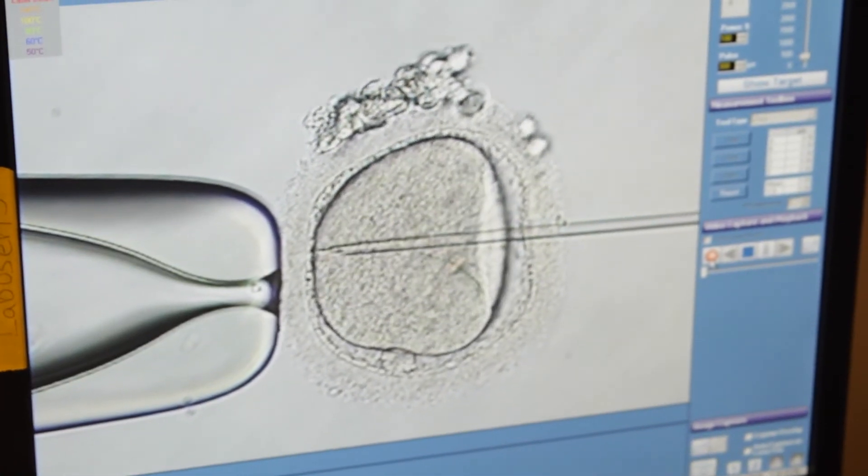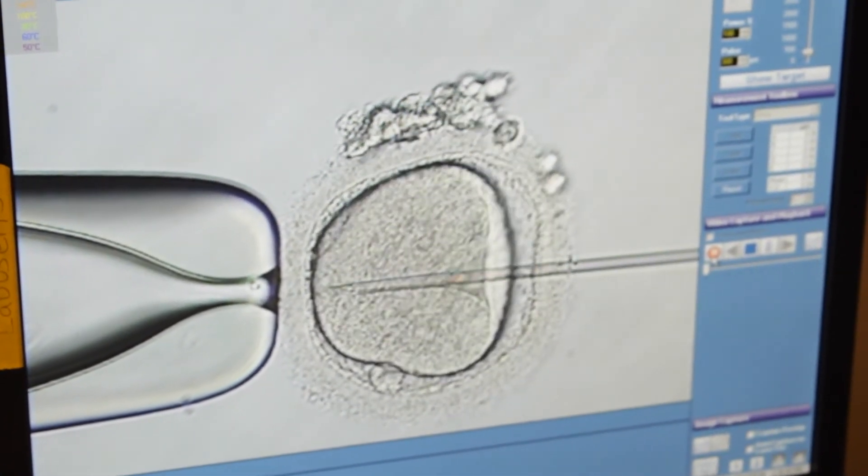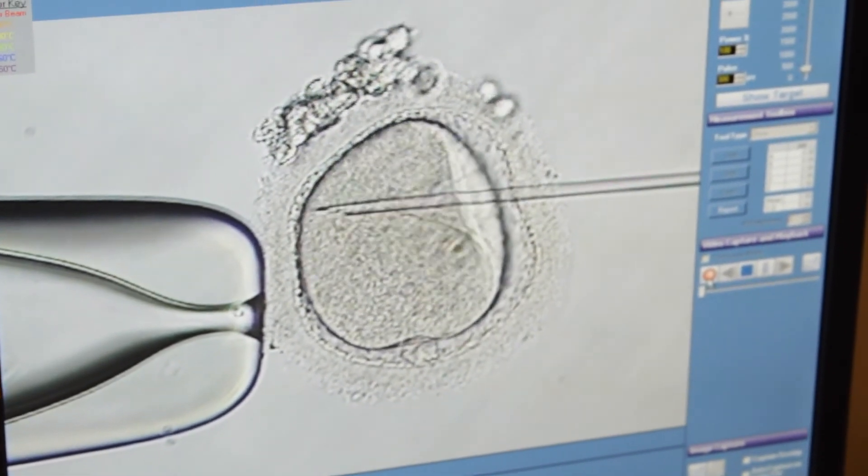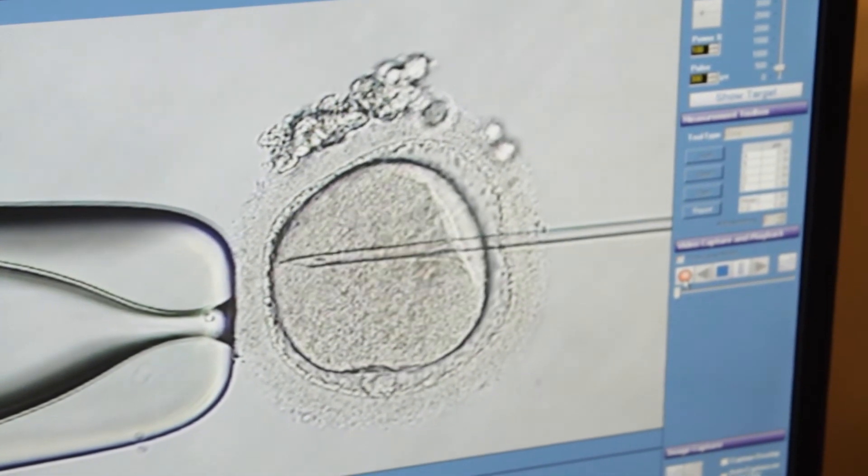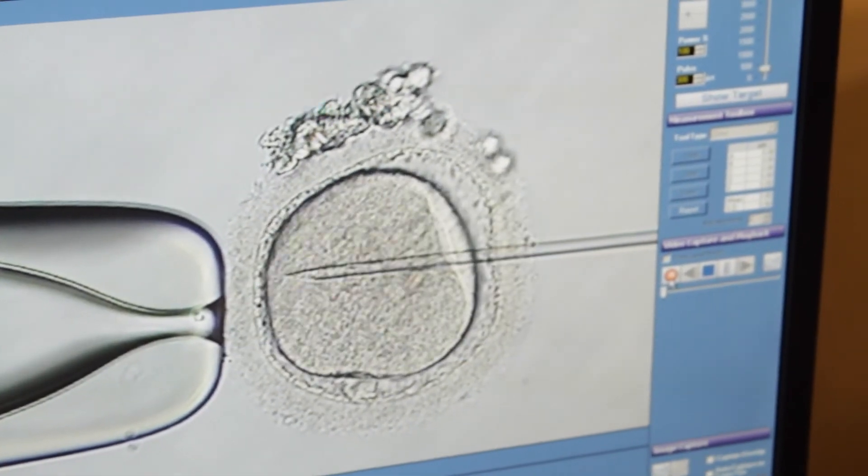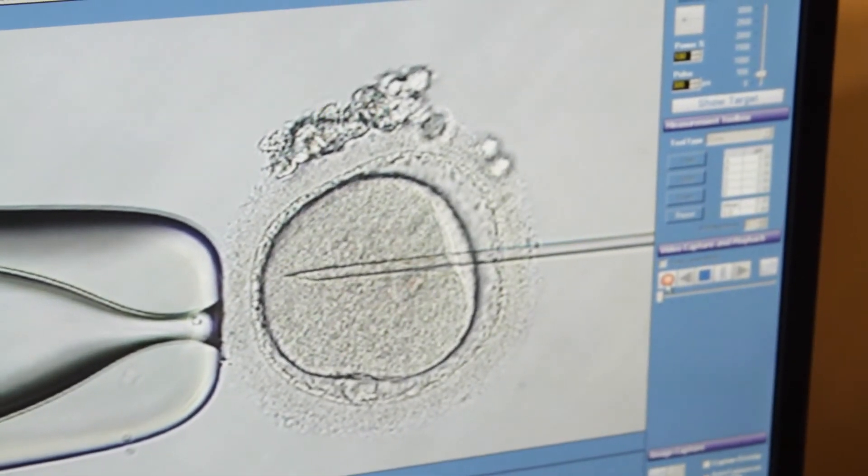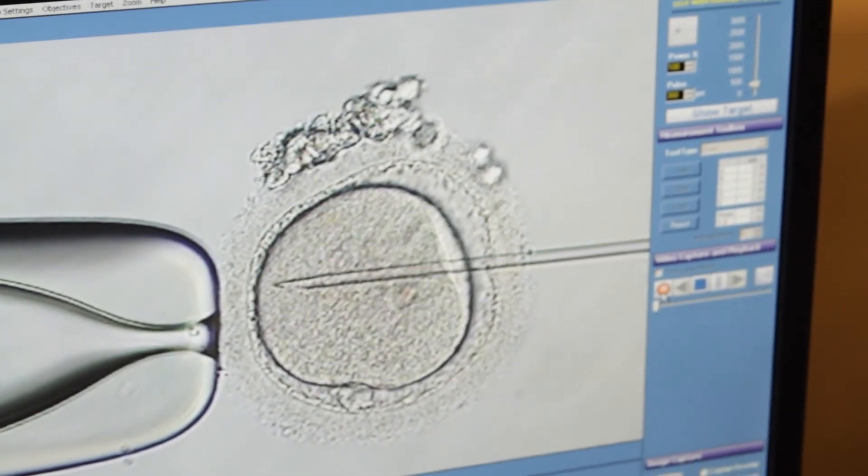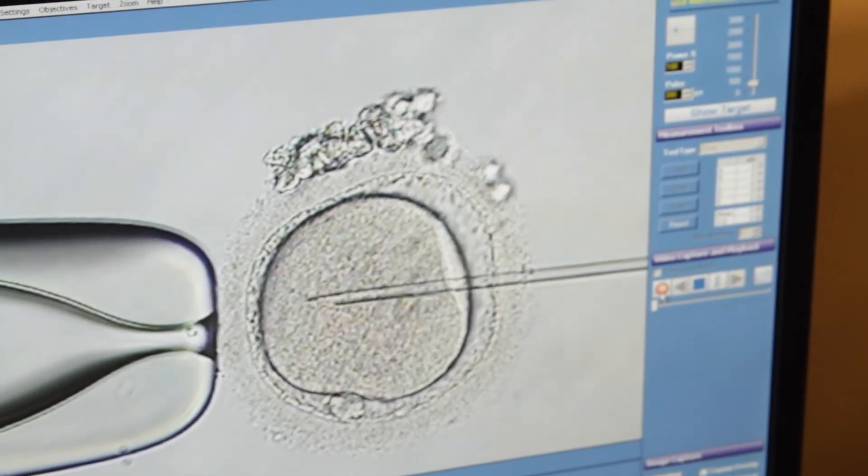Here at RMA of New York, we use a very gentle way of breaking the oolemma, which is the membrane of the egg, which is what Donna's doing there with the circular motion. We don't actually break it by sucking in the ooplasm, which is the standard method.